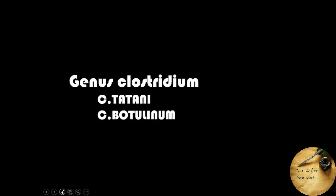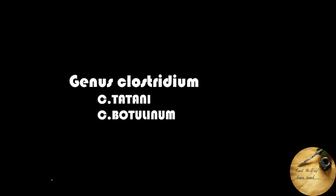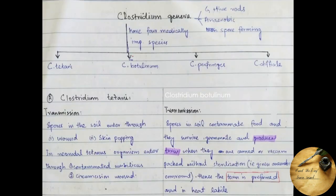Today we are going to study Clostridium tetani and Clostridium botulinum, which are two medically important species of Clostridium genera. Coming towards the important points regarding Clostridium genera, they are gram-positive rods, meaning that on gram staining they give purple color. They are anaerobic and they are spore-forming.